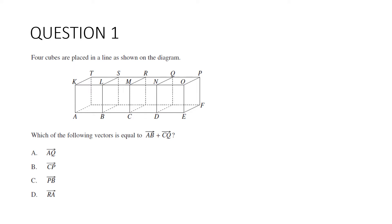Question 1. Four cubes are placed in a line as shown in the diagram. Which of the following vectors is equal to the vector AB plus the vector CQ? If we translate the vector CQ to start at the end of the vector AB, it's going to reach up to here. And so the resulting vector is going to be the vector from A all the way through to R.